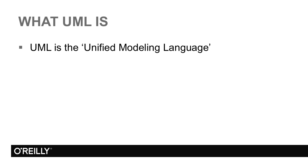UML stands for the Unified Modeling Language. It was developed originally by the Rational Software Corporation, which is now part of IBM. The project started in 1994, and the draft UML 0.8 was launched in 1995, followed by version 0.9 in 1996. In 1997, version 1.0 was offered to the Object Management Group, the OMG, in response to a call for a standard notation.